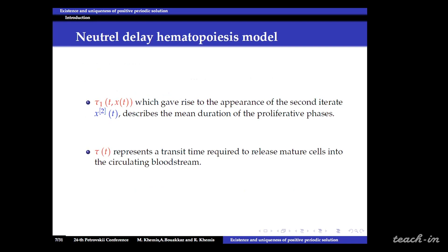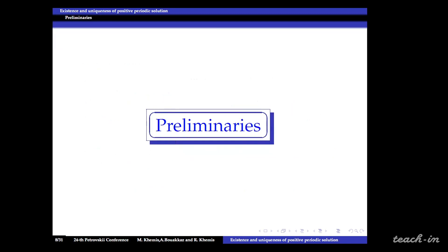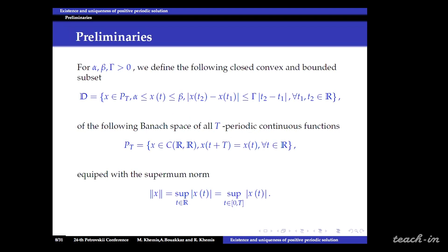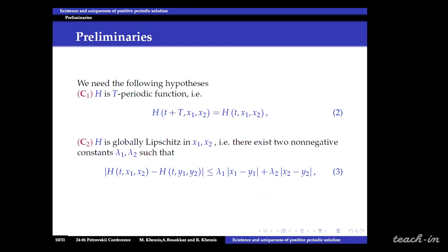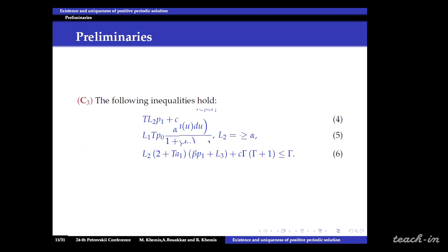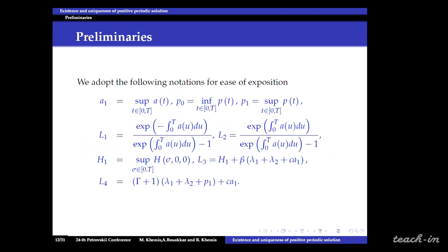This concludes the first part, now let's turn to the next section. In this section we consider the following closed convex and bounded subset of the following Banach space of all T periodic continuous functions equipped with the supremum norm. Furthermore we consider the following assumptions C1, C2 and C3, with adapting the following notations for ease of exposition.